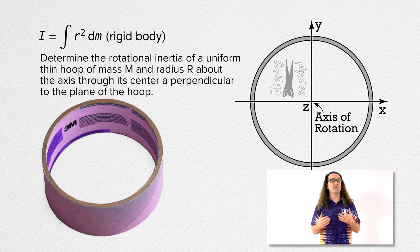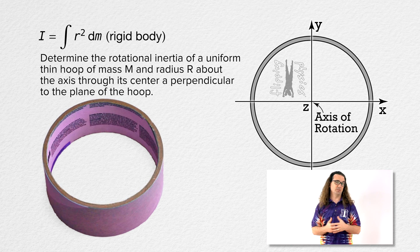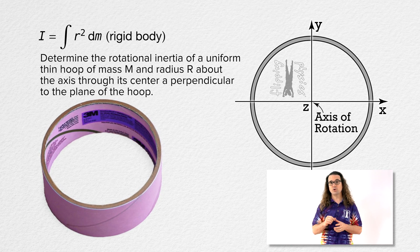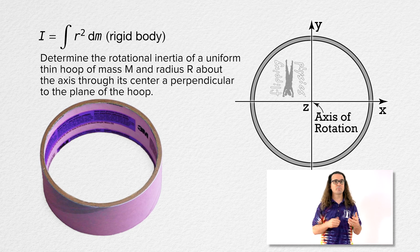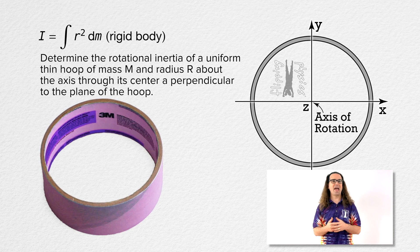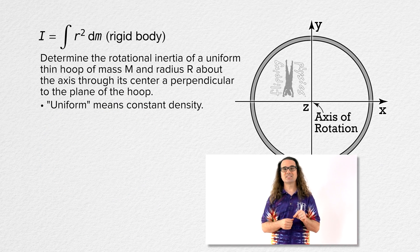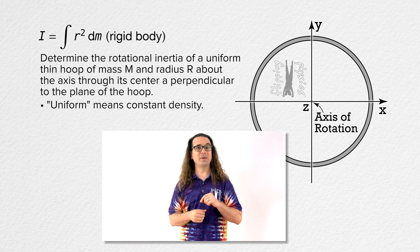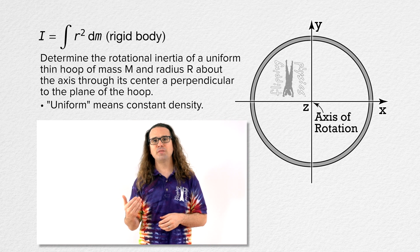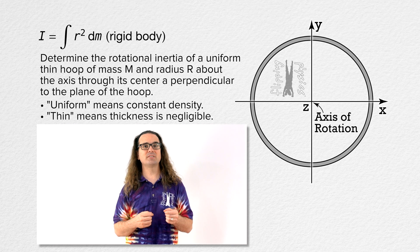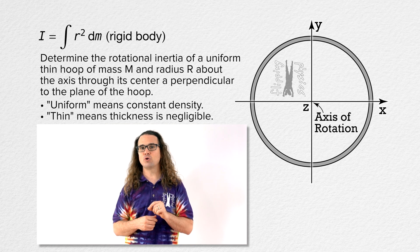Let's make sure we understand a few terms here. When we talk about a uniform thin hoop, these terms uniform and thin have specific meanings. Uniform means the density of the hoop is constant, and thin means the thickness of the hoop is small enough relative to the radius of the hoop such that the thickness of the hoop is negligible.